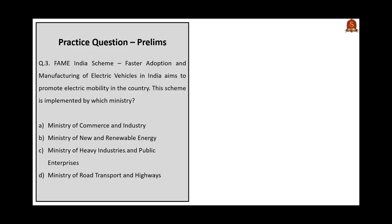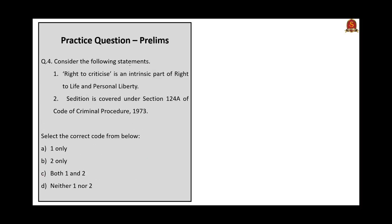The next question states: FAME India scheme — Faster Adoption and Manufacturing of Electric Vehicles in India — aims to promote electric mobility in the country. This scheme is implemented by which ministry? The options given are Ministry of Commerce and Industry, Ministry of New and Renewable Energy, and Ministry of Heavy Industries and Public Enterprises. The correct answer is Ministry of Heavy Industries and Public Enterprises.